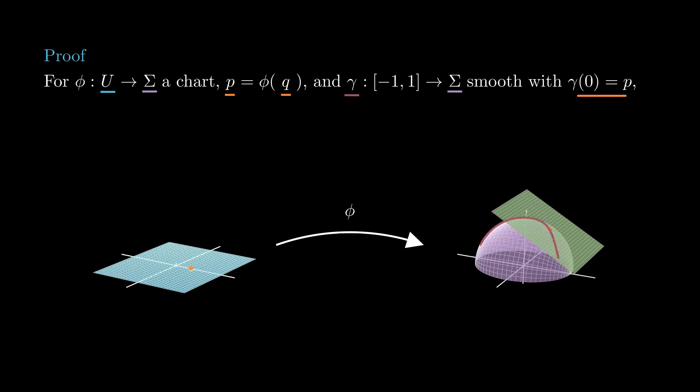In principle, there are a lot of curves passing through p, but we will see that all their velocity vectors live in the tangent plane to sigma at p.